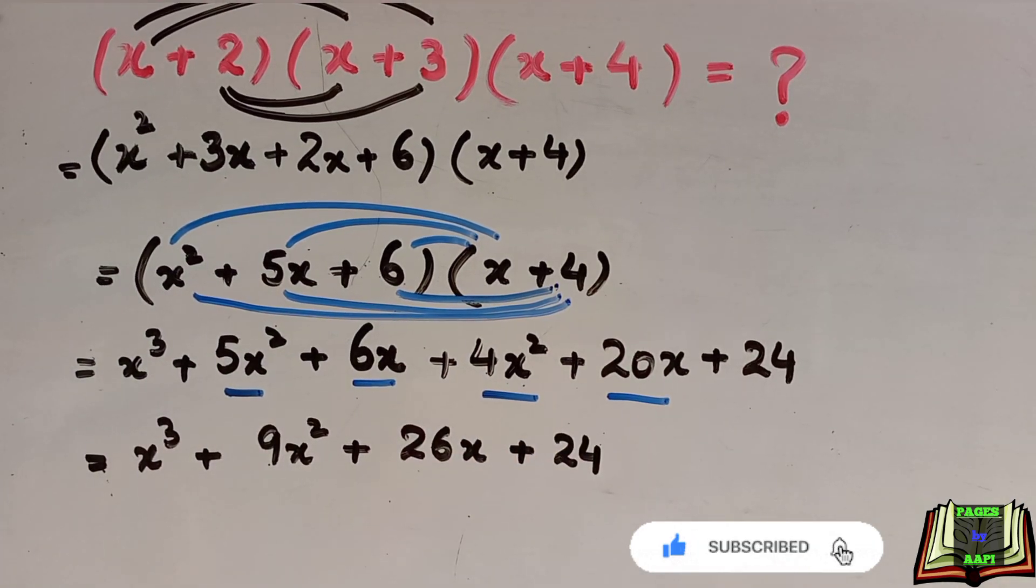This is the required answer. x plus 2 into x plus 3 into x plus 4 is equal to x cube plus 9x square plus 26x plus 24.